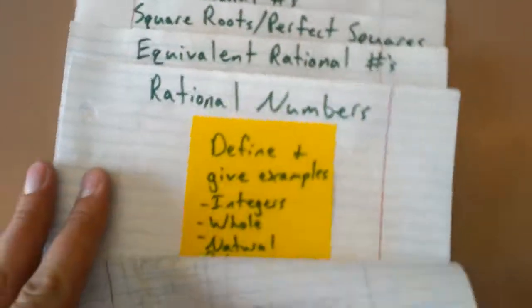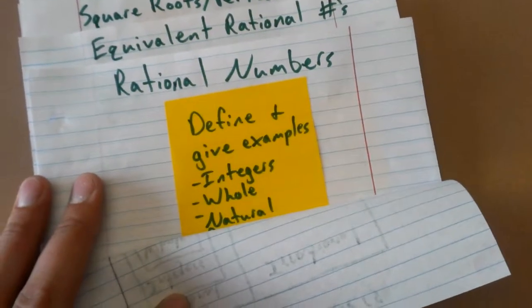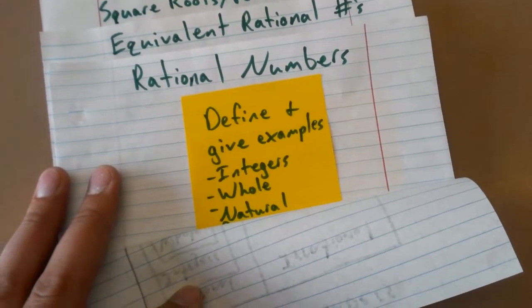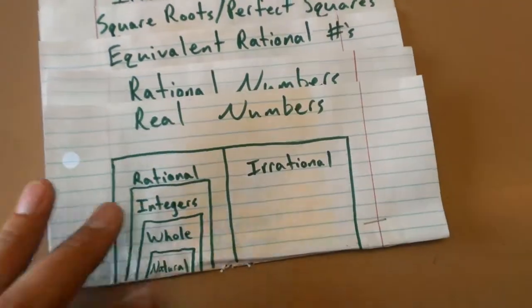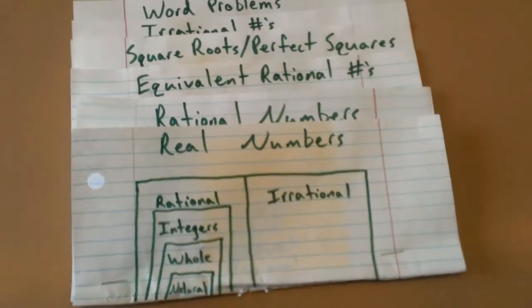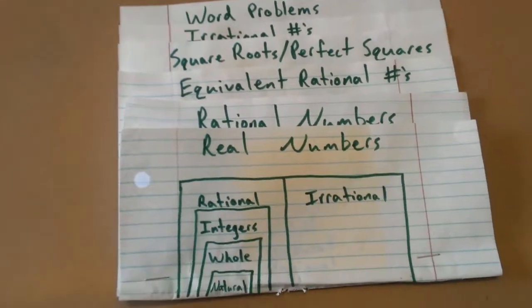For the rational numbers section, they need to define and give examples of rational numbers, integers, whole numbers, and natural numbers. And then lastly, they should have a chart which incorporates all of the real numbers.